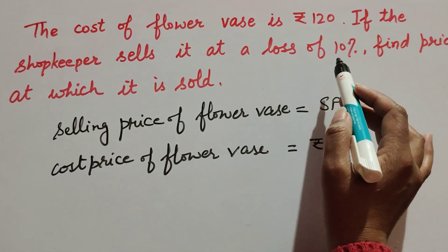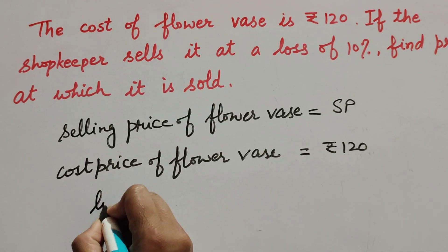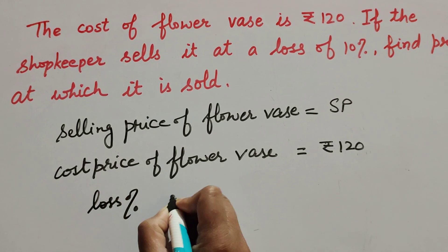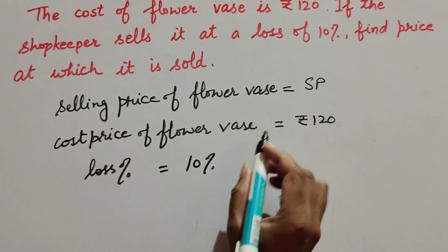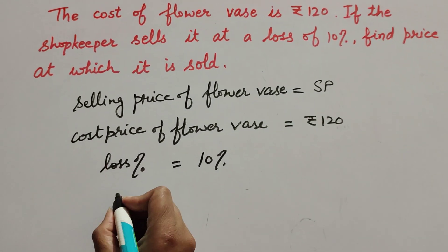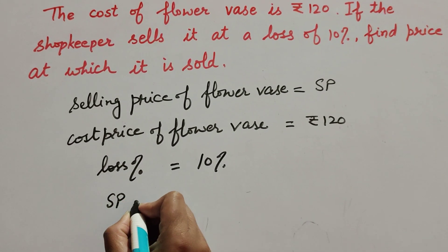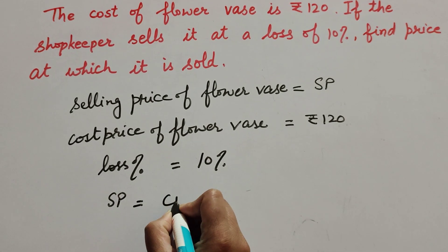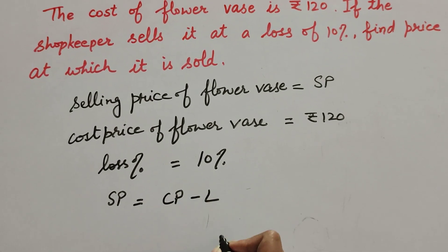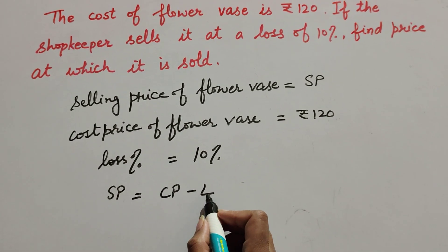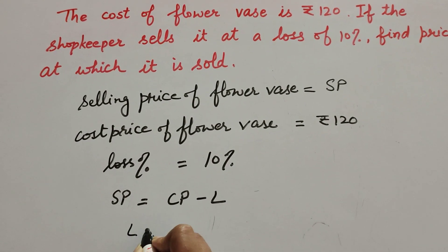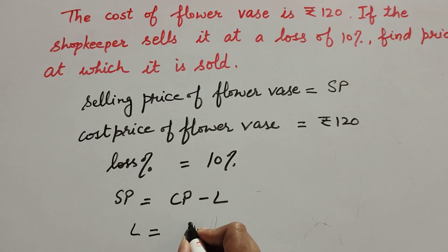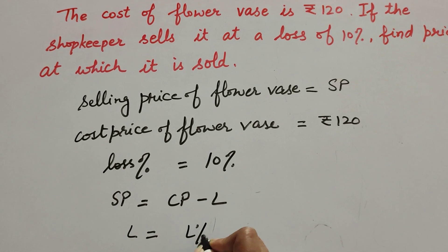And loss percentage is also given. Loss percentage is equal to 10 percent and we find the selling price. So we know the formula to find selling price: it is equal to cost price minus loss. We need loss, but the given thing is loss percentage, so first we find loss. It is equal to loss percent multiply cost price over 100.